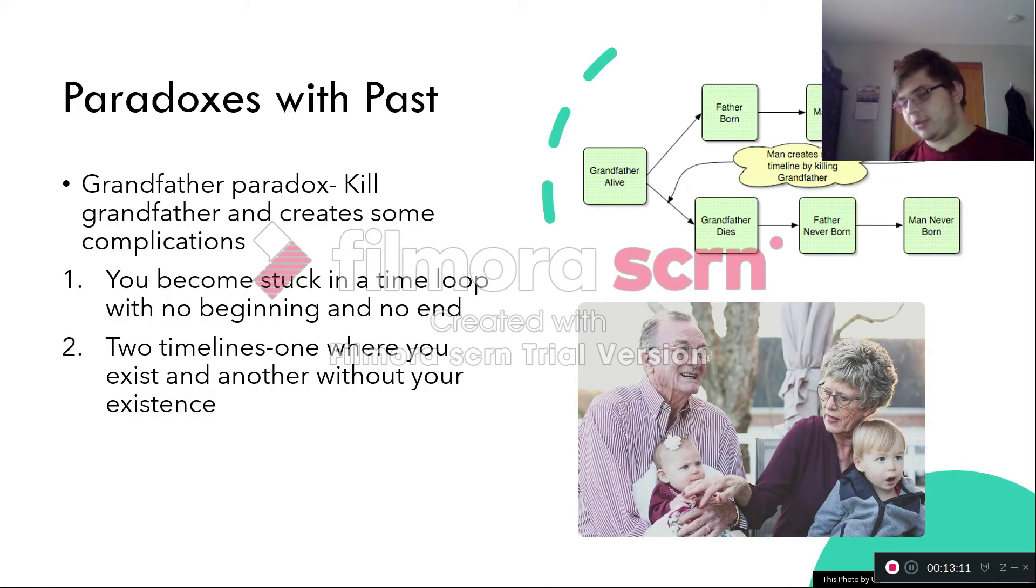Now, here's some paradoxes if we do even travel to the past. One of them is the grandfather paradox, which I'm pretty sure a lot of you heard about. Basically, you go back in time, you kill your grandfather, and create some complications. And the results of them are, there are two results that could happen. One, you become stuck in a time loop with no beginning and no end. So you build your time machine. Your grandfather dies. Your father was never born. You were never born. So that means you never create a time machine. That means your grandfather is alive. Your father is born. You're born. And you're traveling in time, kill your father. And this whole loop never ends. Or there's a second possibility. There's two timelines. One, where you do exist because you never killed your grandfather. Or two, you don't exist because you killed your grandfather.